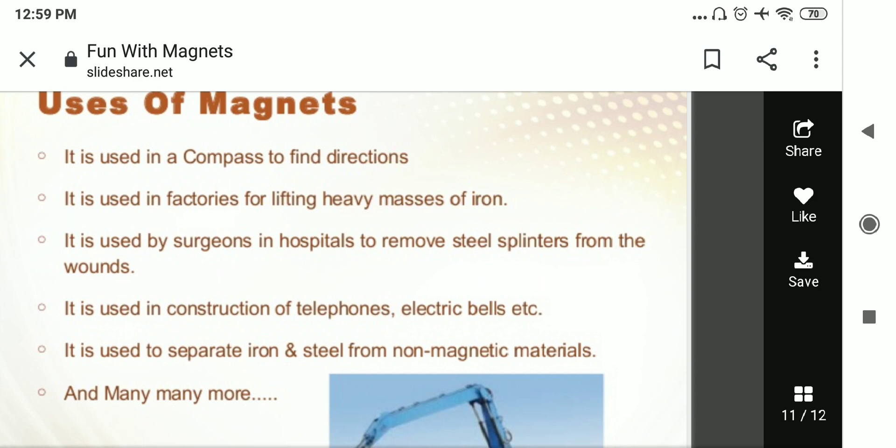Next it is used to separate iron and steel from non-magnetic materials. You know we can separate the magnetic and non-magnetic materials with the help of magnet. As magnet will attract the magnetic material means iron,